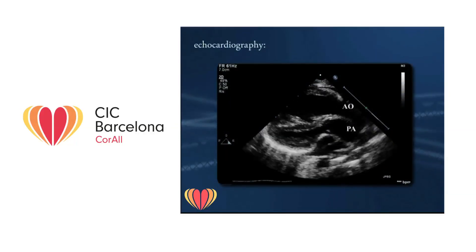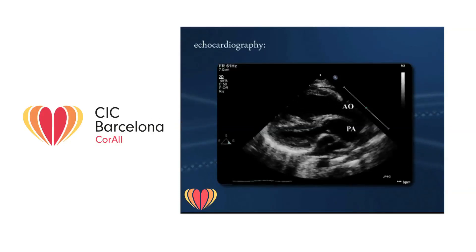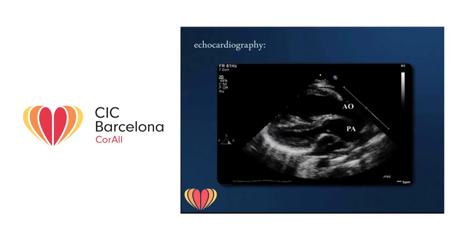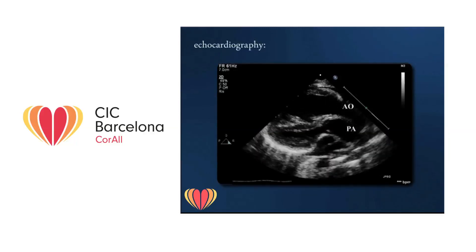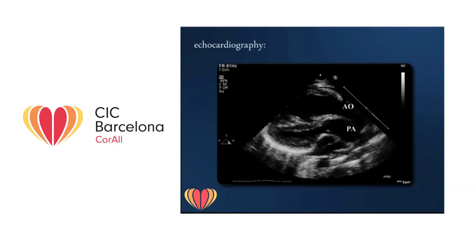This is a classic case of transposition of the great arteries with intact ventricular septum. The parasternal long axis view clearly demonstrates the double-barrel arrangement of the great arteries, which run parallel with the aorta anterior to the pulmonary trunk.